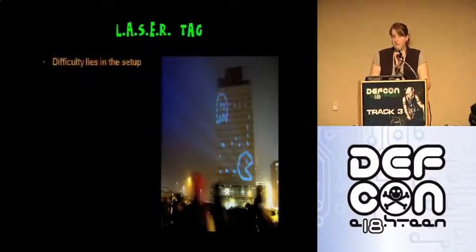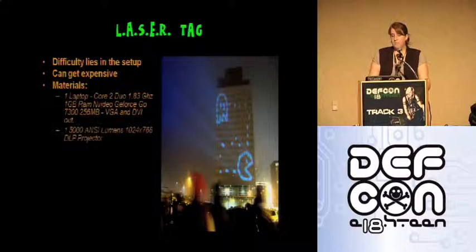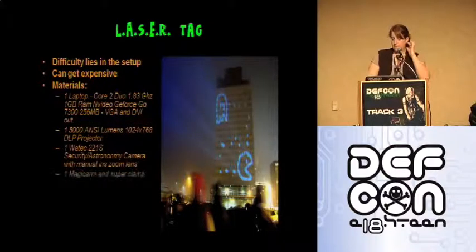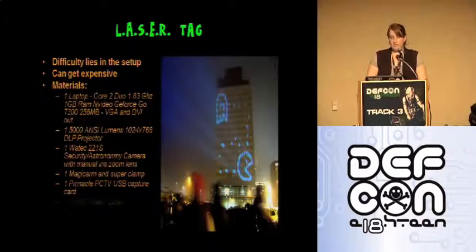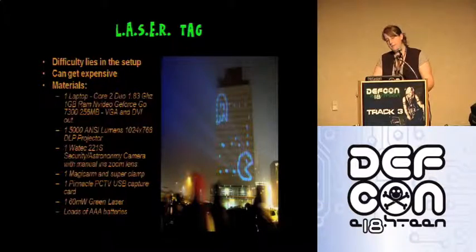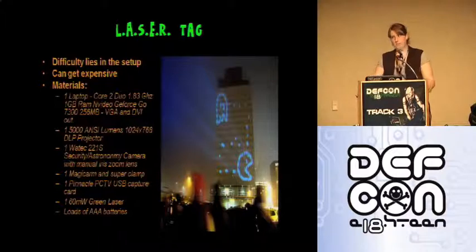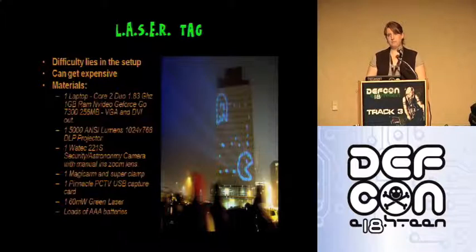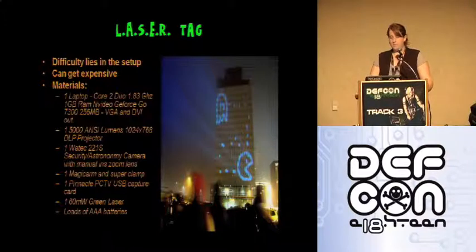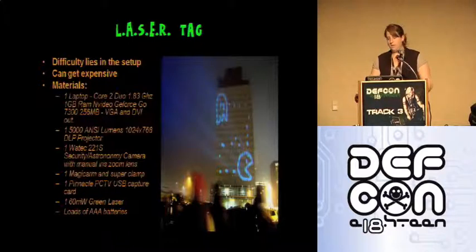The last example for the tried and true section is the graffiti research lab's laser tag. The hardest part is acquiring the parts and setting it up. The materials listed on the GRL site are: a laptop, a 50,000 ANSI lumens projector, a security astronomy camera with manual iris zoom lens, a magic arm with a super clamp, a PC TV USB capture card, and a 60 megawatt green laser — which in some places is illegal, so don't shine it in animals or people's eyes. You'll also need AAA batteries. This setup can get expensive, so it's worth looking at eBay, Craigslist, or pawn shops.